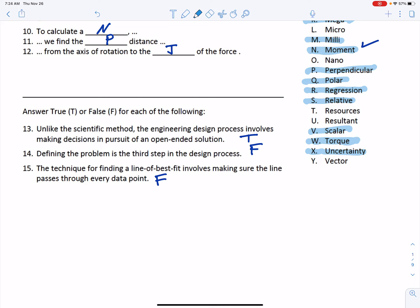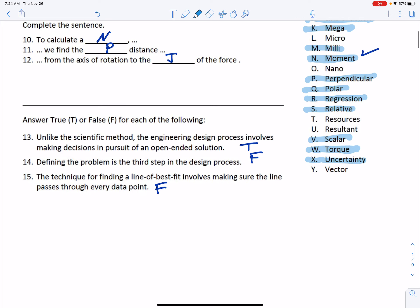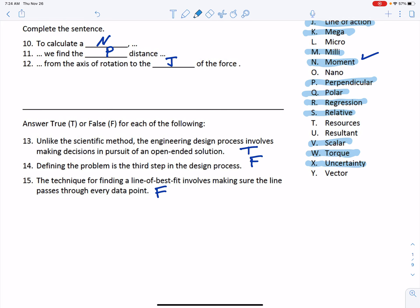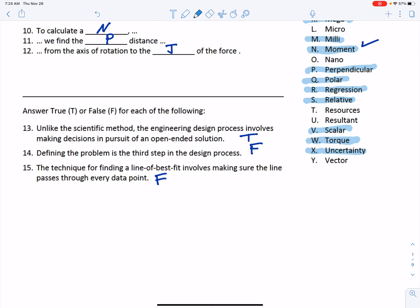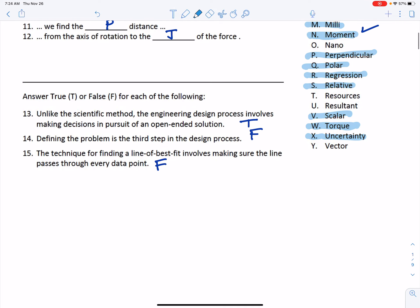Next we get to some true/false: unlike the scientific method, the engineering design process involves making decisions in pursuit of an open-ended solution. That is true. Defining the problem is the third step in the design process. The implication here is this comes from the Oakes and Leone reading for design. If you see a problem like that, refer to your notes about that and you can just look up the order of steps that were described there, and you can find that that's false.